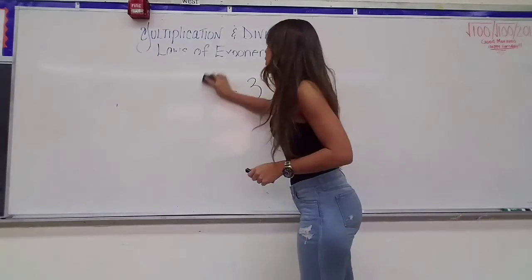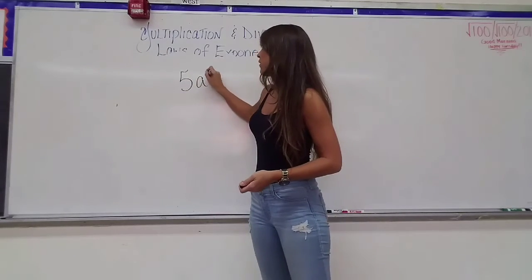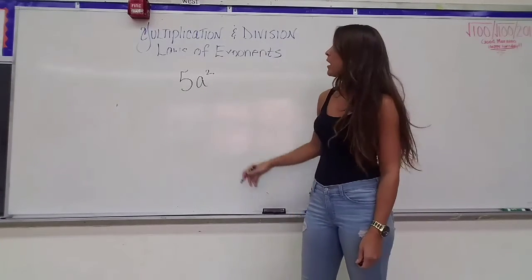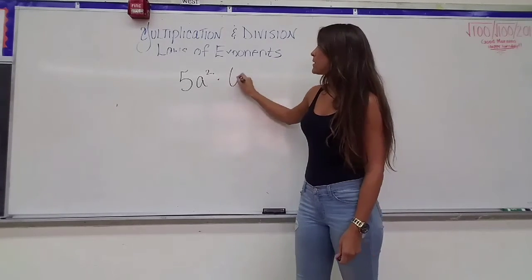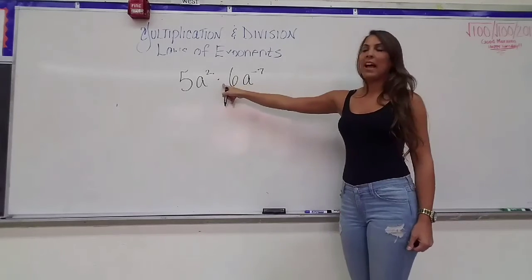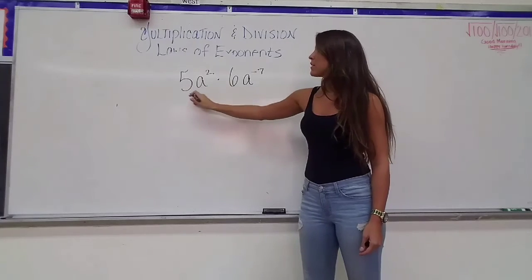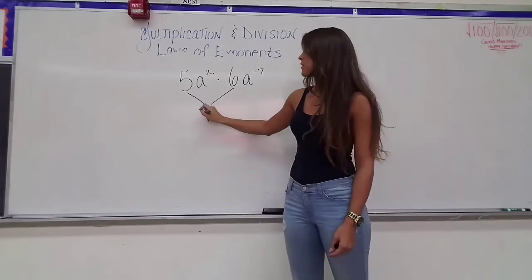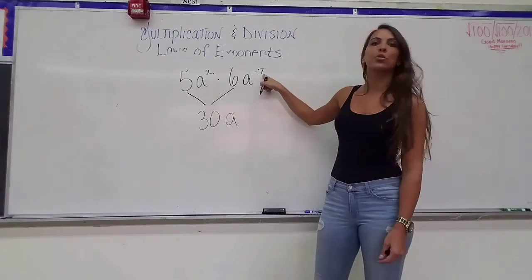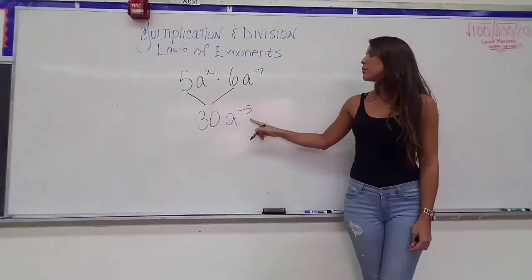Let's do an example with coefficients. A coefficient is the number before the variable being multiplied by it — for example, in 5a squared, 5 is the coefficient. So for 5a squared times 6a to the negative 7th power: the bases are both a, so we apply the multiplication law. The coefficients 5 and 6 get multiplied to give 30. We keep the base a and add the exponents 2 plus negative 7 to get negative 5, giving us 30a to the negative 5th. Once you learn the negative law of exponents, you'll be able to simplify this further.